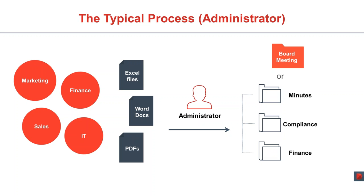Here you see a typical process in an organization when it comes to collating and delivering material. On the left hand side you see the different departments who might contribute content to the board materials. That content can come in a variety of formats — the most common being Microsoft Office, for example Excel, Word, PowerPoint, but also PDFs or images. It is the responsibility of the administrator in the middle to pull all the information together and collate it into a board meeting package to send out to directors in time for them to review ahead of the meeting, usually a week before. If the board pack consists of 200 to 300 pages — which is an average size — it is not uncommon for an administrator to work with 20 to 30 different files in different formats to prepare and deliver that one pack.